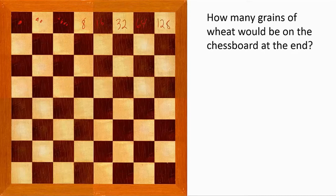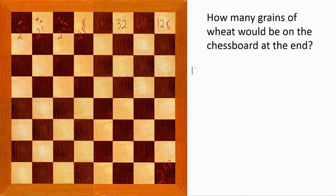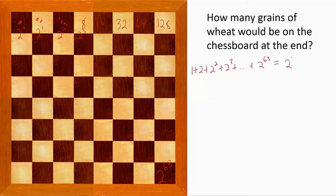You would notice that this is just 2 to the power of 0, 2 to the power of 1, 2 to the power of 2, 2 to the power of 3, and so on. Since we're starting with 2 to the power of 0, the last square would be 2 to the power of 63. This total would be equal to 1 plus 2 plus 2 squared plus 2 cubed, and so on, plus 2 to the power of 63, which equals 2 to the power of 64 minus 1.